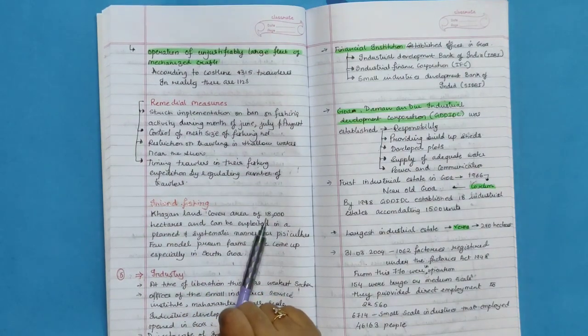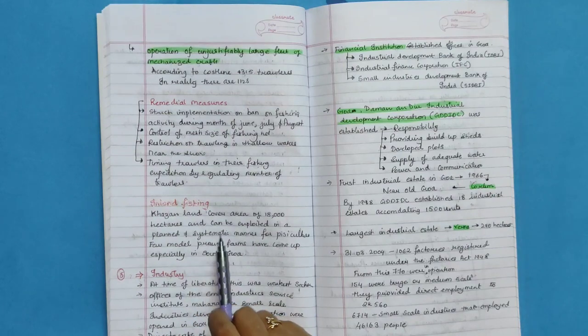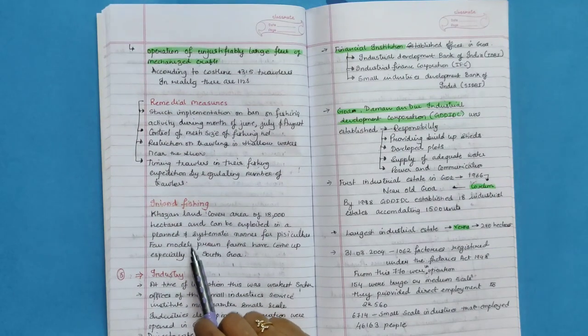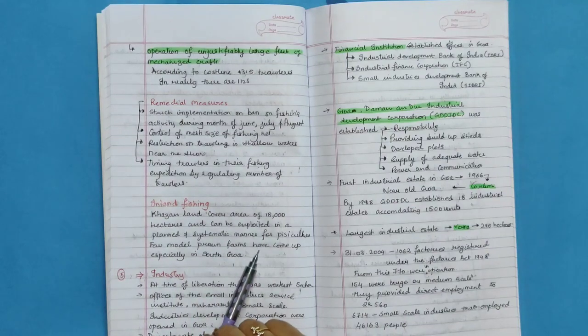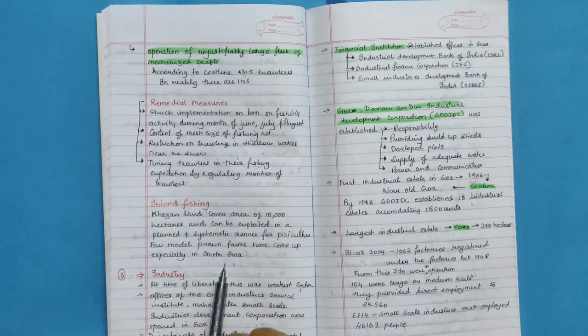Inland fishing. Khazan land covers area of 18,000 hectares and can be exploited in a planned and systematic manner for prawn culture. Few model prawn farms have come up, especially in South Goa.